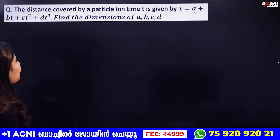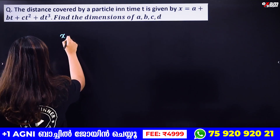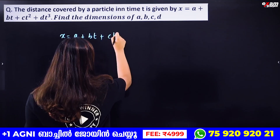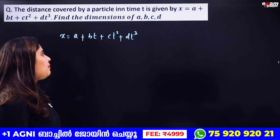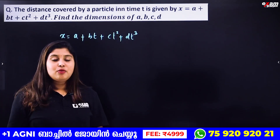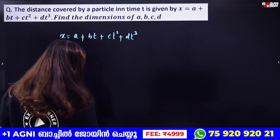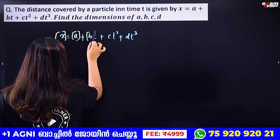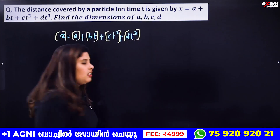Next: the distance covered by a particle in time t is given by x = a + bt + ct² + dt³. Find the dimensions of a, b, c and d. We use the principle of homogeneity — each term must have the same dimension as x.